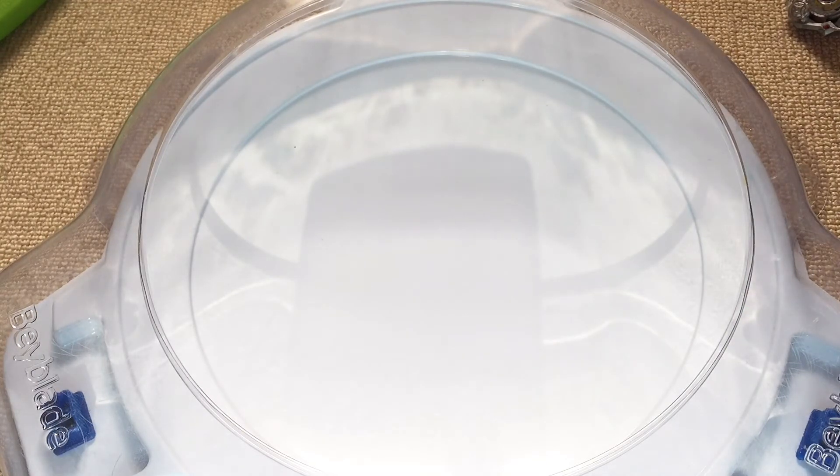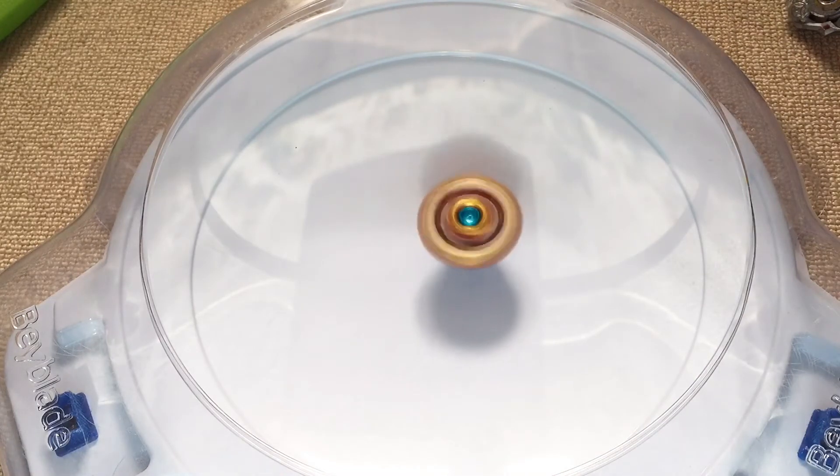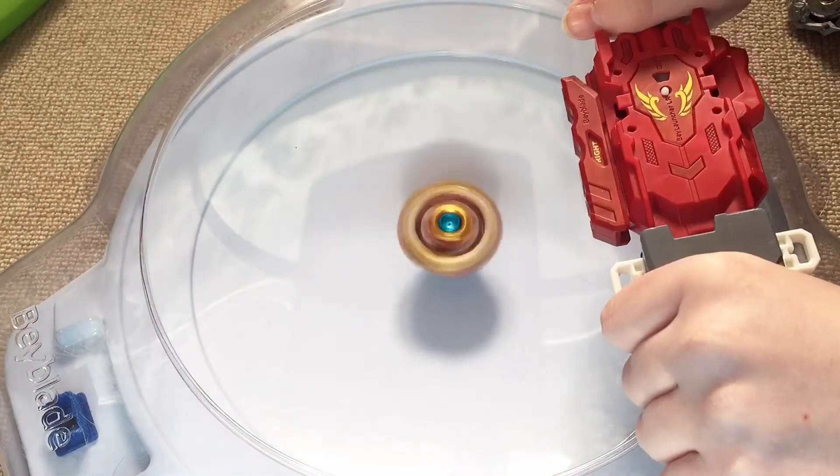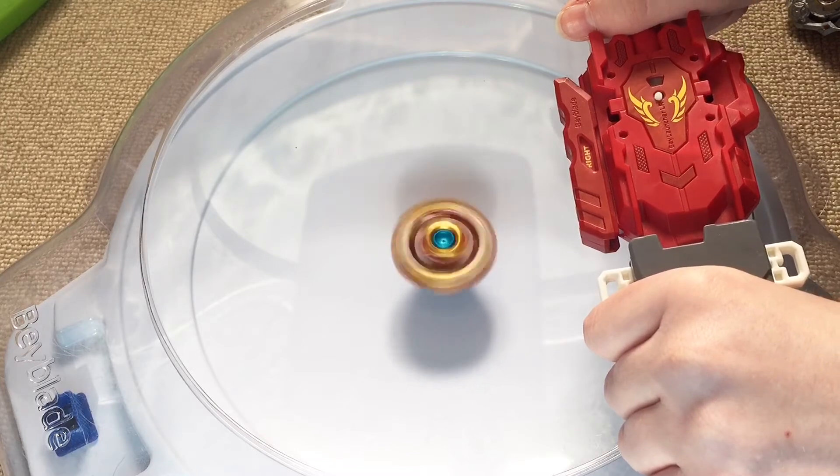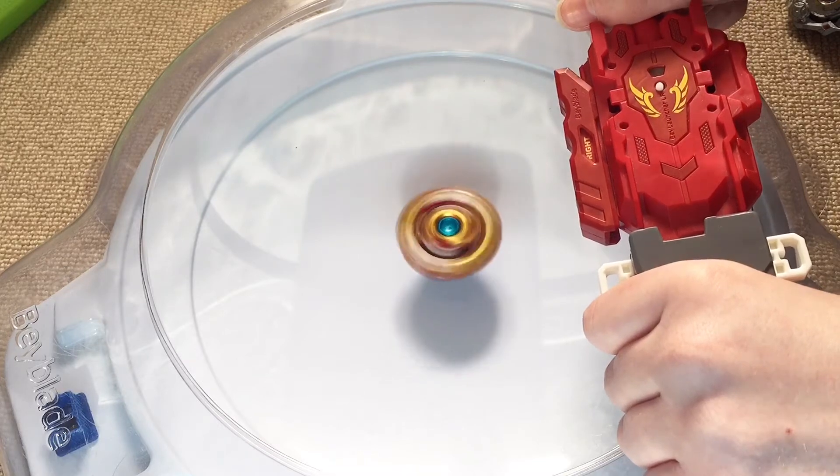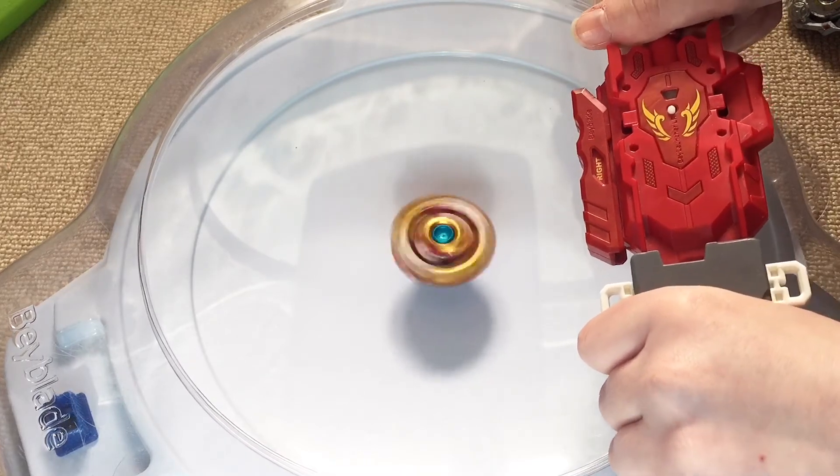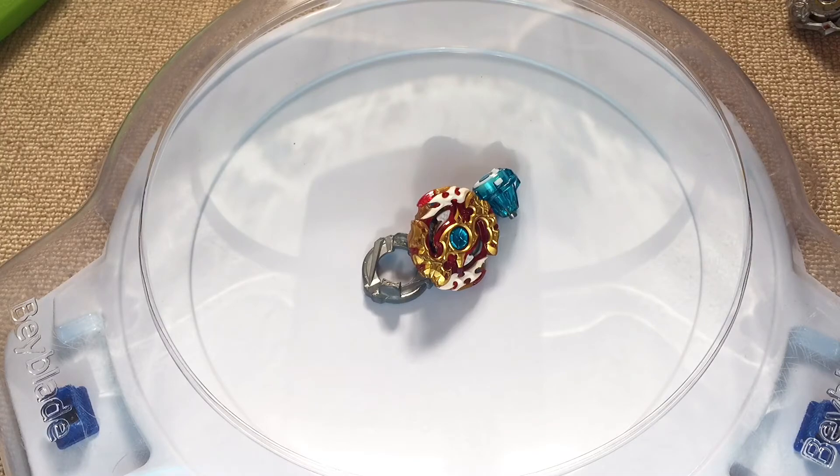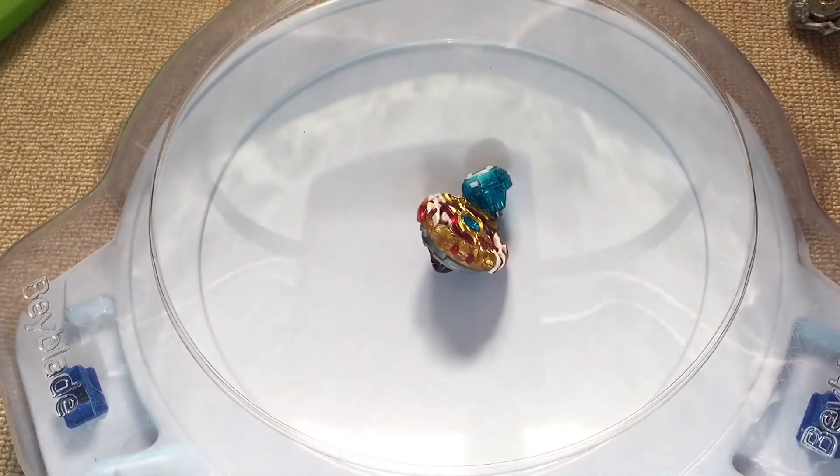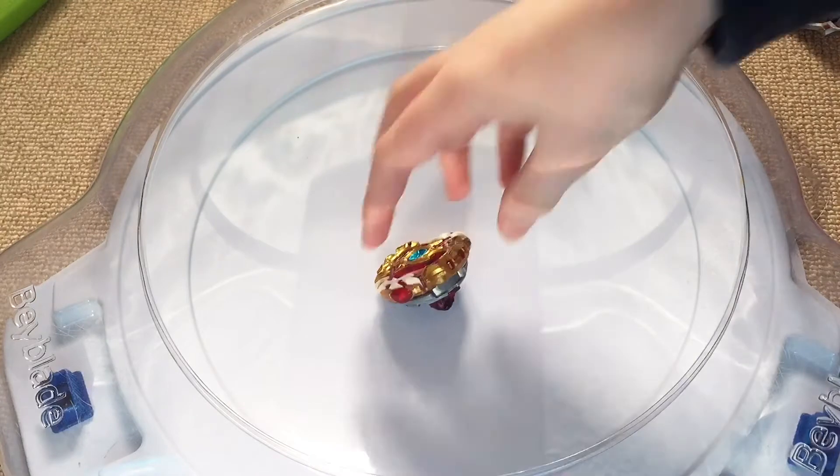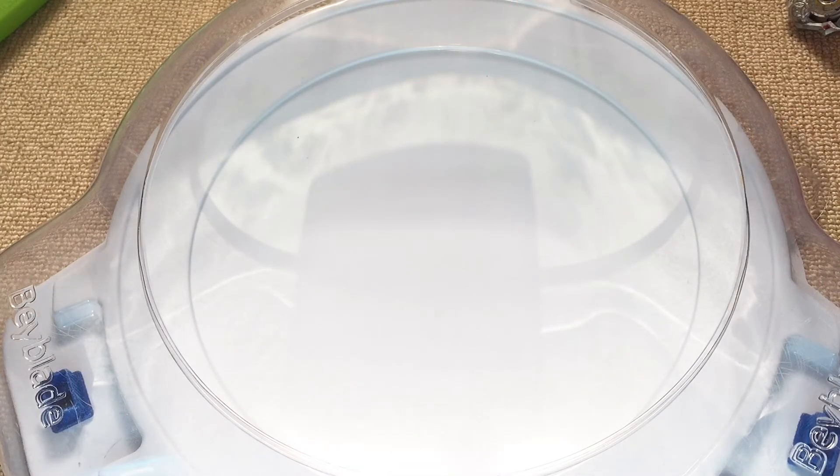Now I'm going to test out the Takara Tomy worst combo against Spriggan Requiem, going to do the same thing, let it spin for a while. It completely exploded into smithereens in the first hit, while Requiem was on like really, really low spin as well, oh my goodness.